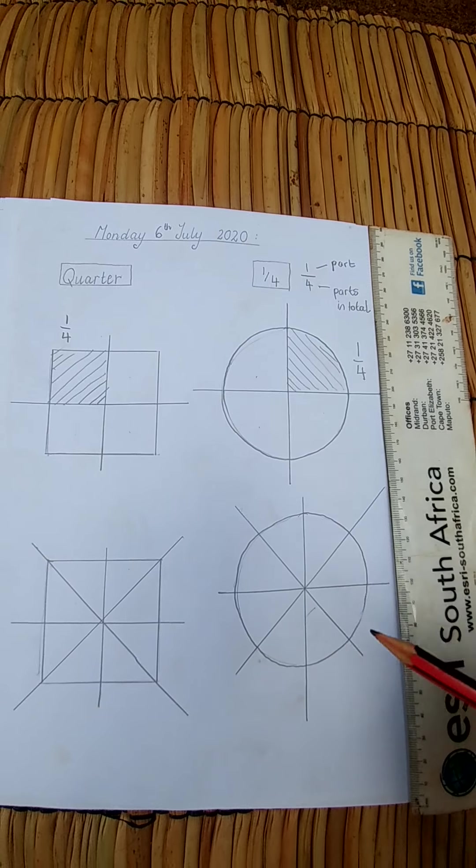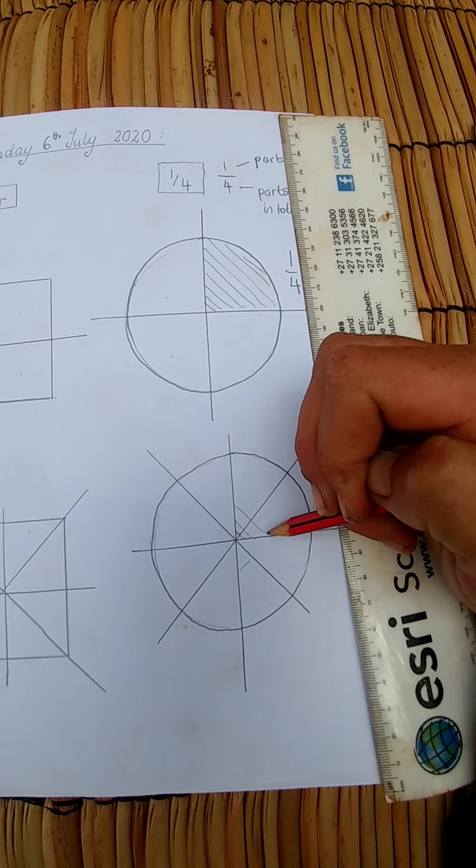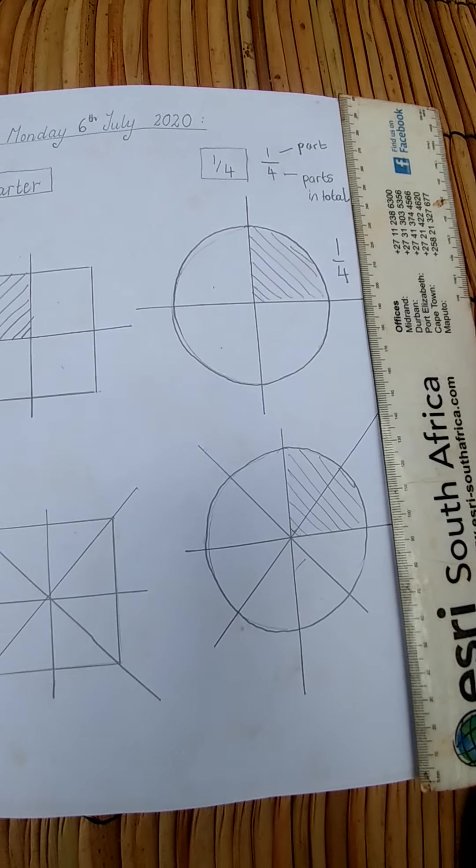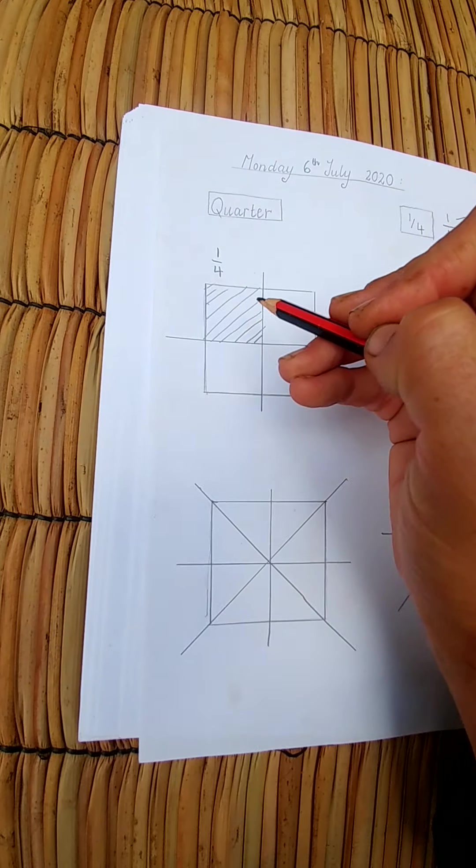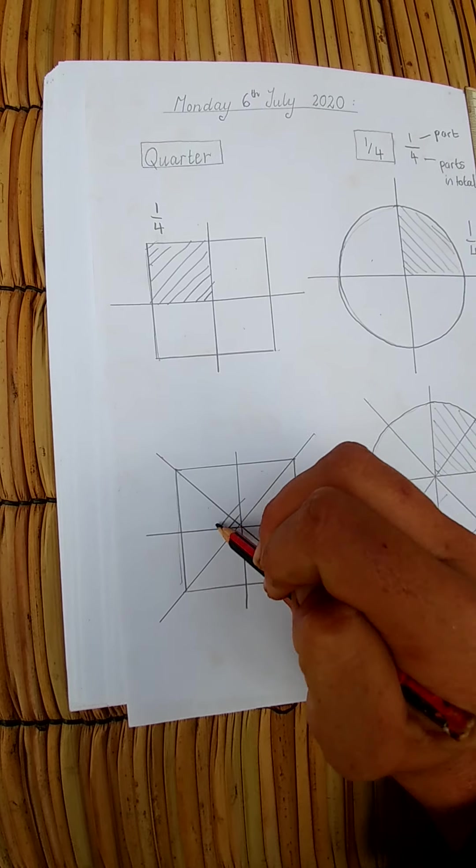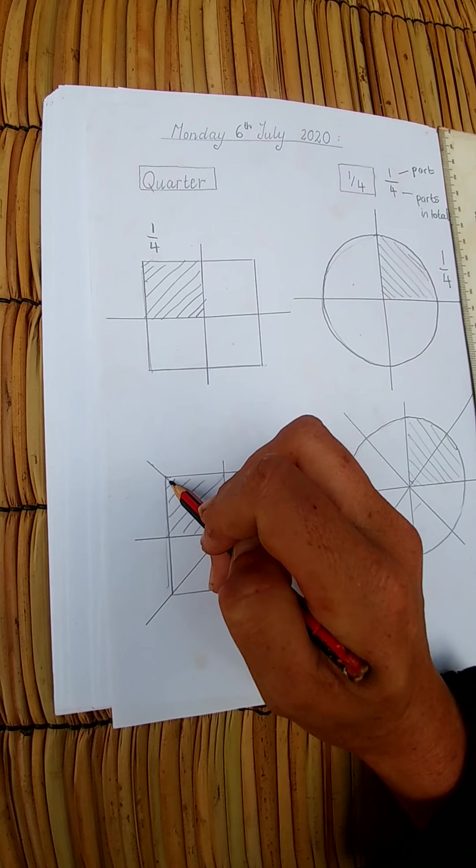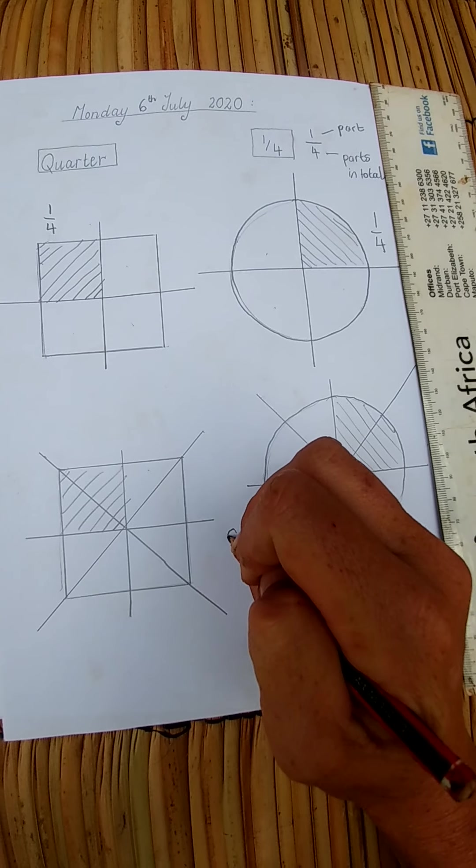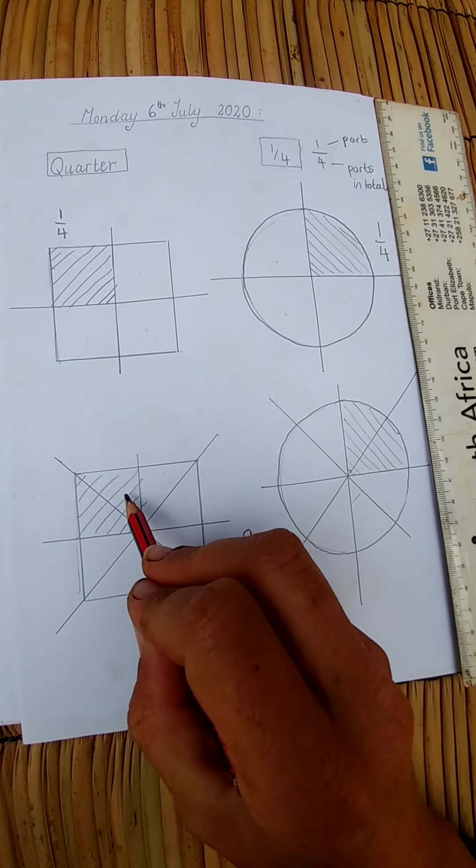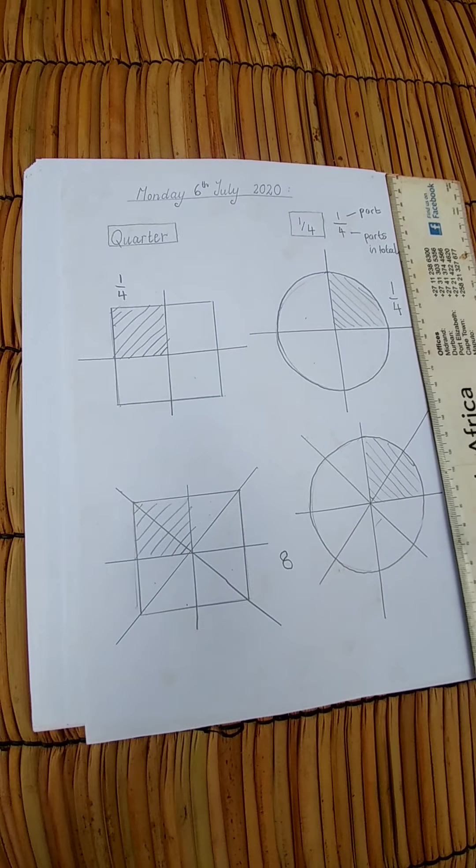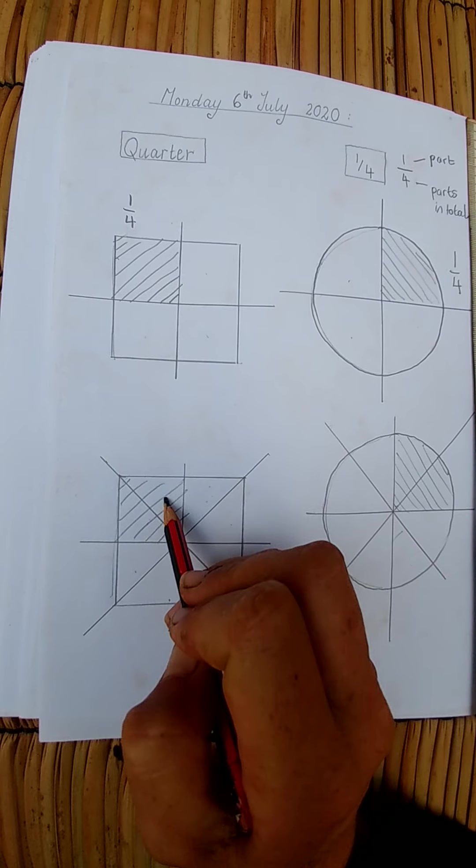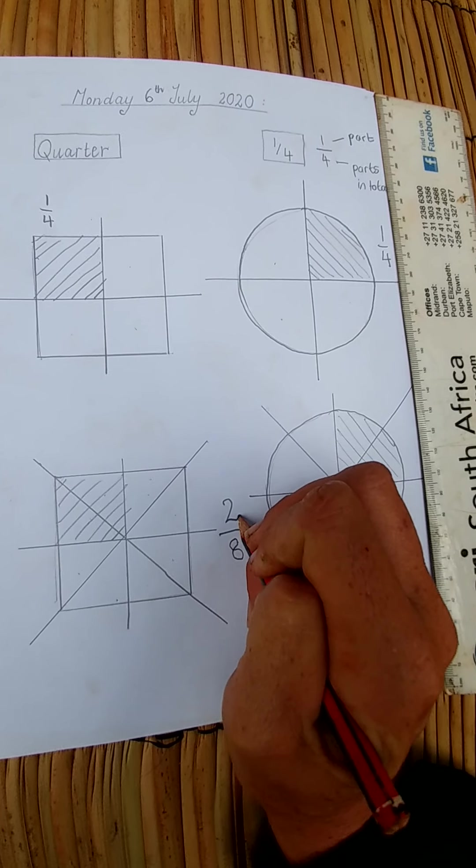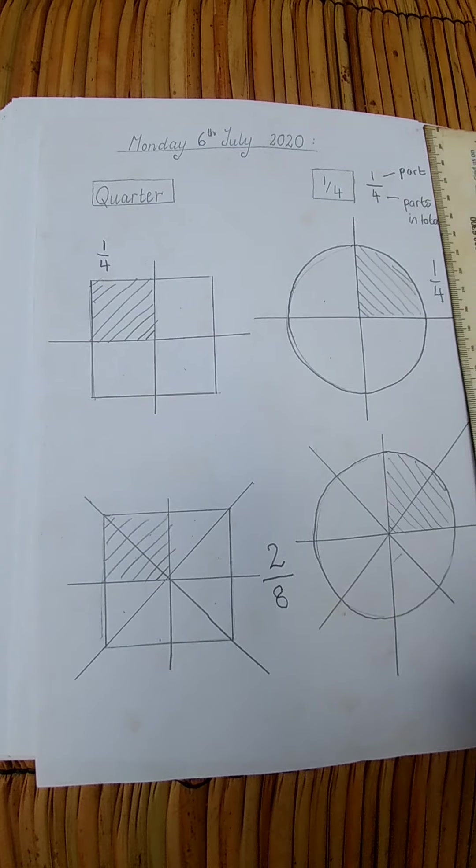Let's shade in a quarter again. We're going to shade in the same amount. I'm going to draw my lines again. Do you see this time we're taking two parts? In this one we have eight in total, and how many parts have we shaded in? One, two.